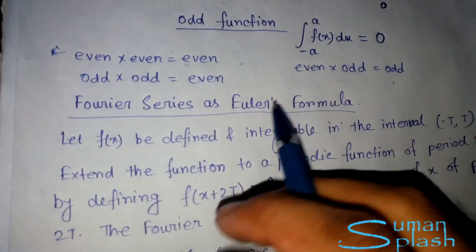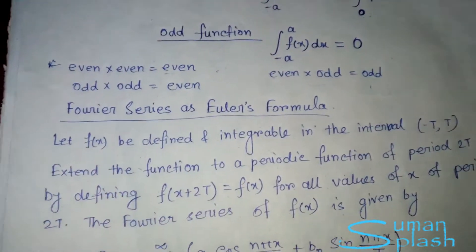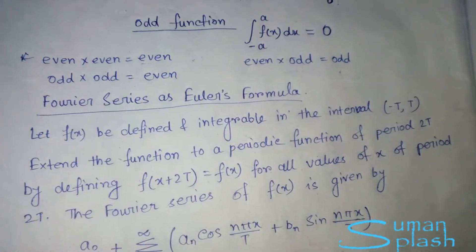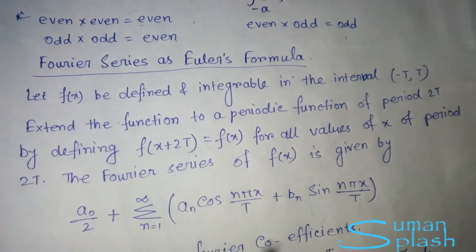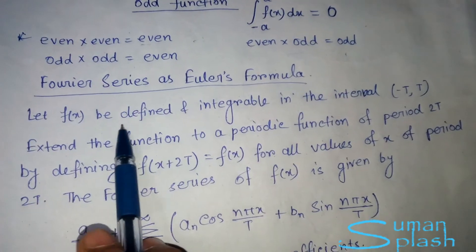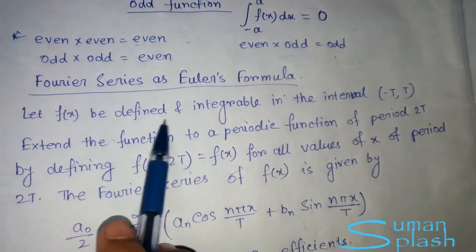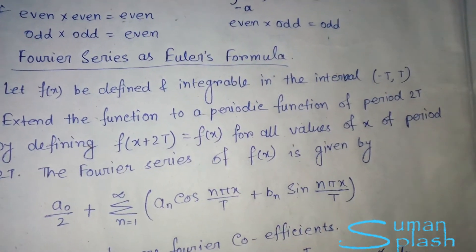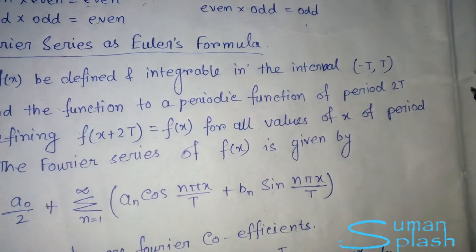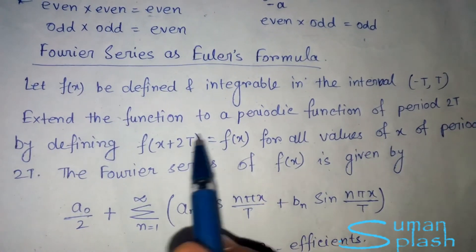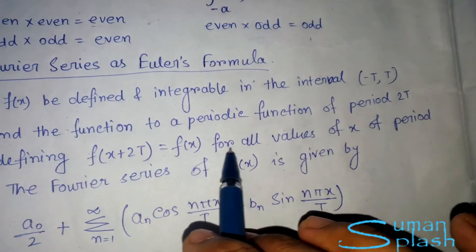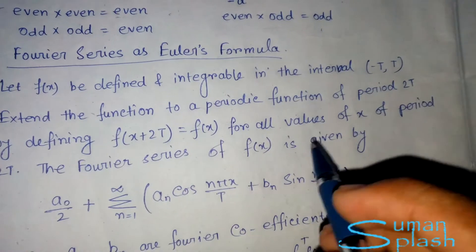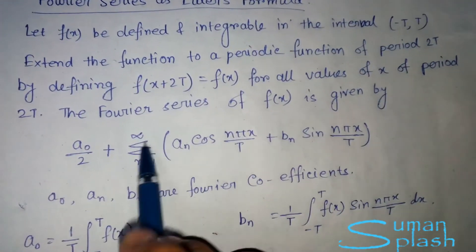Now we come to the Fourier series using Euler's formula, which is mainly helpful for problem solving. Let f(x) be defined and integrable on the interval −t to t. We extend the function to a periodic function of period 2t by defining f(x + 2t) = f(x) for all values of x.